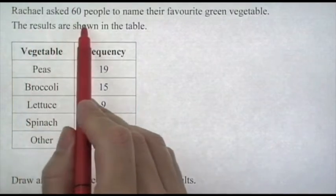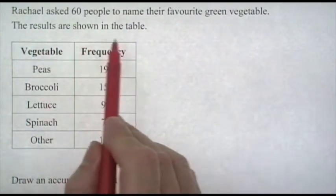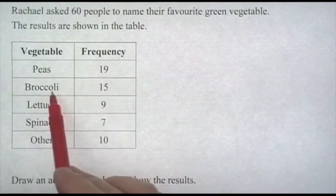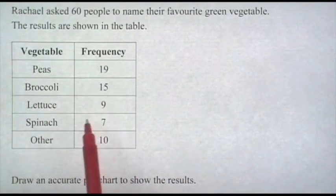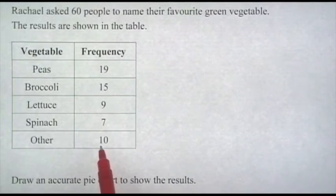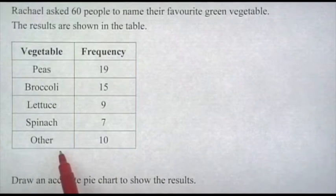Rachel asked 60 people to name their favorite green vegetable. The results are in the table: peas had 19 people, broccoli 15, lettuce 9, spinach 7, and other green vegetables 10. There were quite a lot of other green veggies chosen in ones and twos, but instead of having their own category we grouped them together as a group of 10.